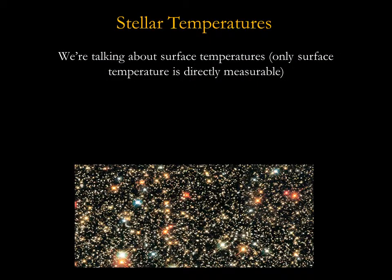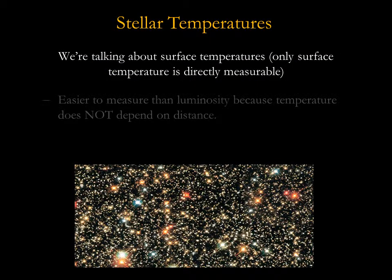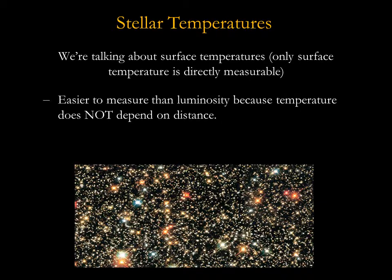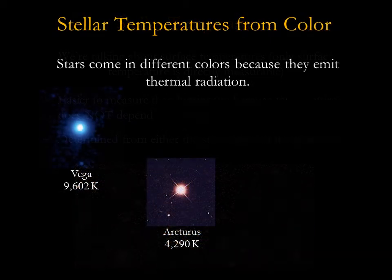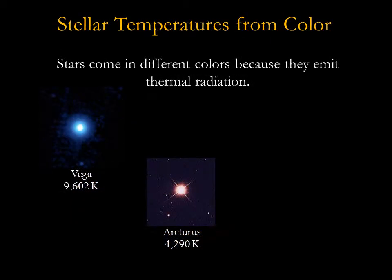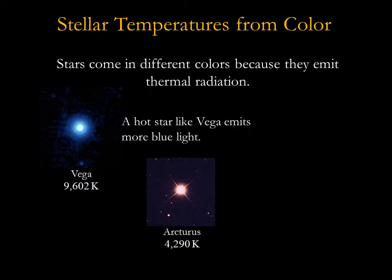Measuring a star's surface temperature is easier than measuring luminosity because temperature doesn't change with distance. We determine surface temperature from either the star's color or its spectrum. Stars appear in different colors because they emit thermal radiation. A hot star like Vega emits more blue light, and a cooler star like Arcturus emits more red light.